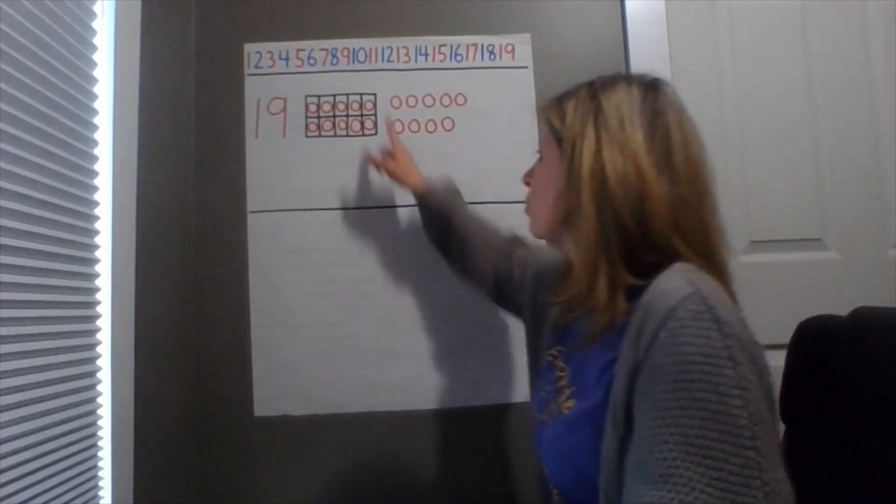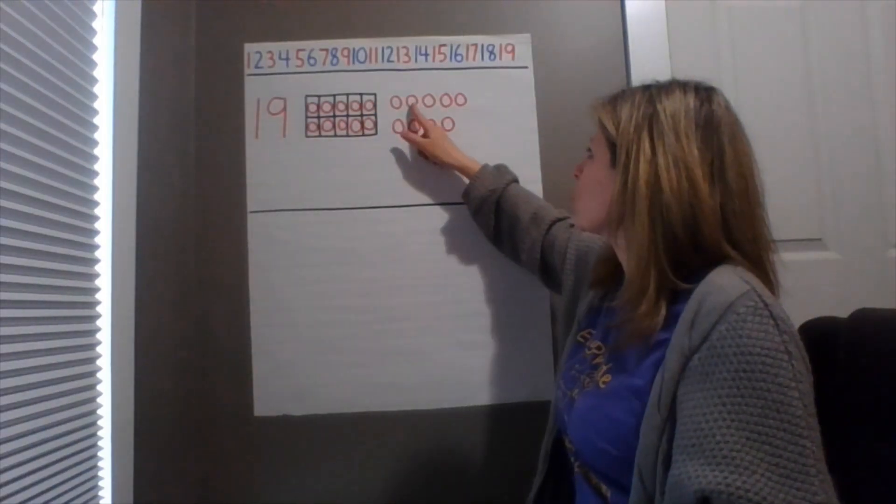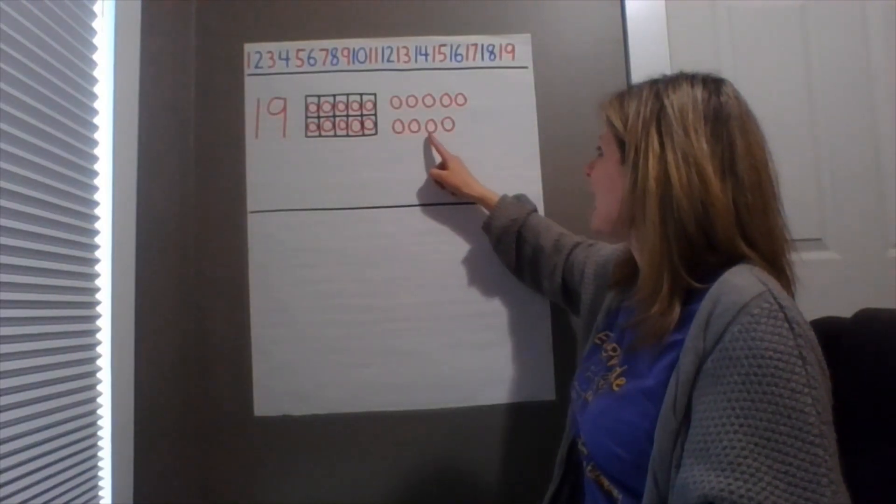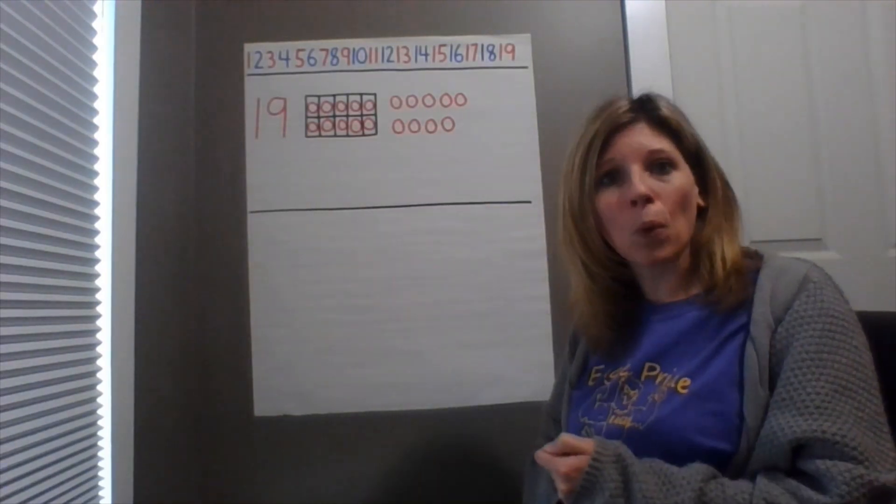That's a lot of counters. We have our group of 10 and one, two, three, four, five, six, seven, eight, nine more.